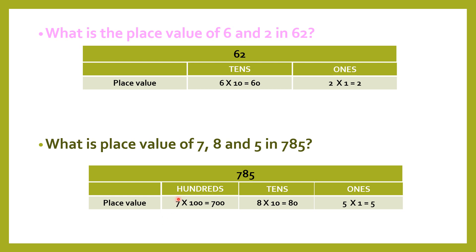We are going to multiply each digit by its position number. 7 into 100 becomes 700. 8 into 10 becomes 80, and 5 into 1 becomes 5. So the place value of 7 is 700, 8 is 80, and 5 remains 5 in the number 785.